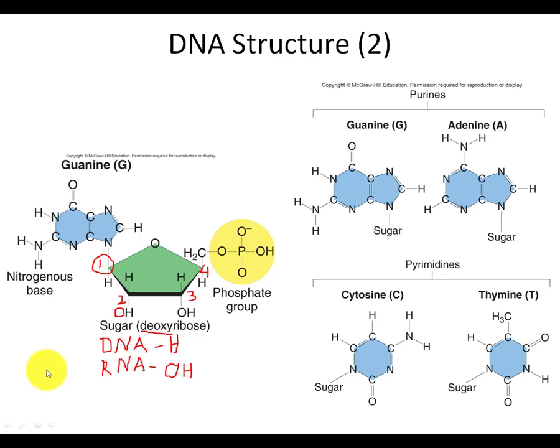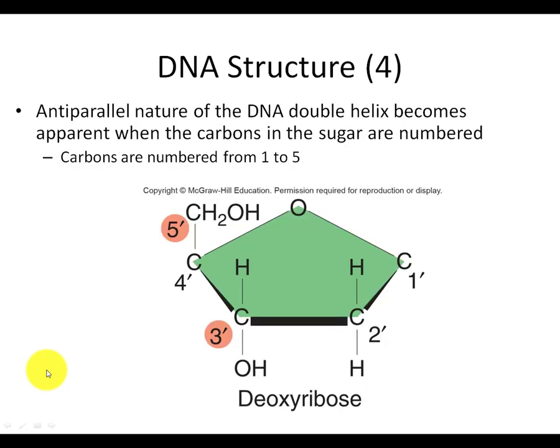Carbon number five is important because the phosphate group is attached to it. Each nucleotide has three phosphates attached — though for simplicity, diagrams often show just one phosphate group. Carbon number four: don't worry about it. So to summarize the pentose sugar: carbon one attaches to the base, carbon two has H (in DNA) or OH (in RNA), carbon three is the attachment site for the backbone, and carbon five connects to the phosphate.